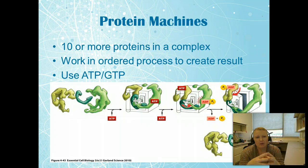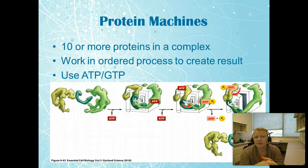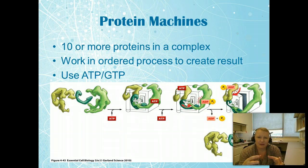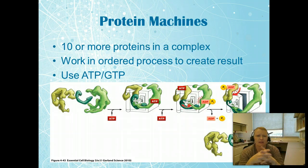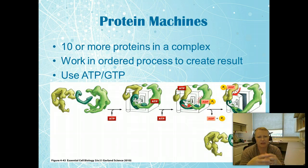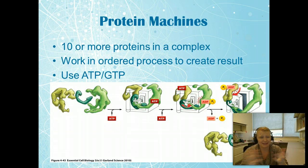Protein machines are amazing — you've already encountered ATP synthase, a classic example. A protein machine has 10 or more proteins in the complex and works in a very ordered process to create a result, always requiring energy input. These machines help drive many of the cell's functions and are far more common than we usually discuss in class.